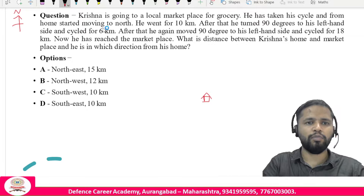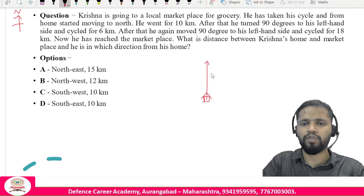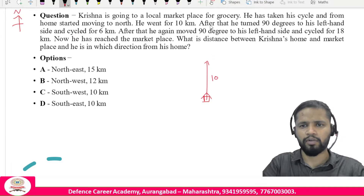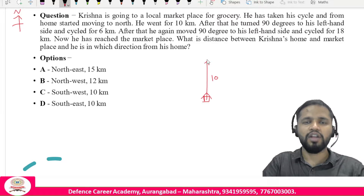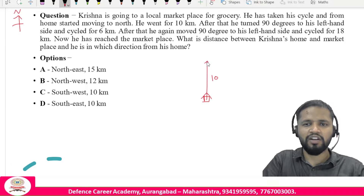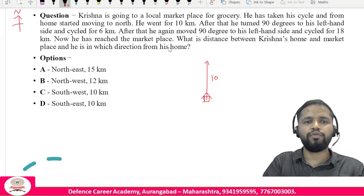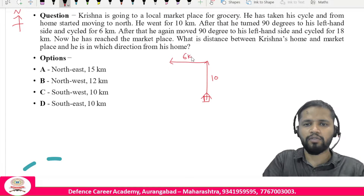Krishna travels 10 kilometers north. He then turns 90 degrees to his left. When facing north, the left-hand side is west, so he turns west and cycles for 6 kilometers.